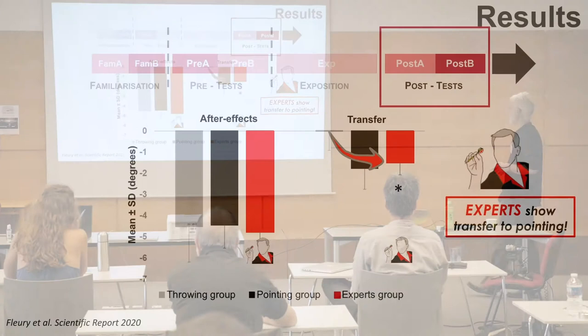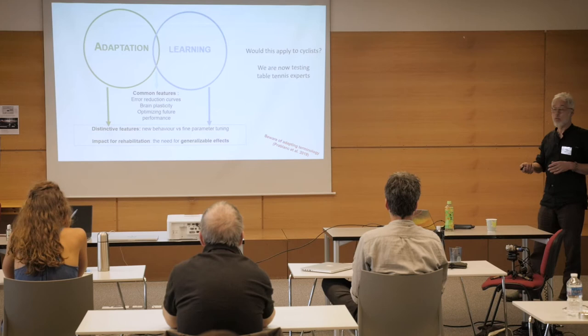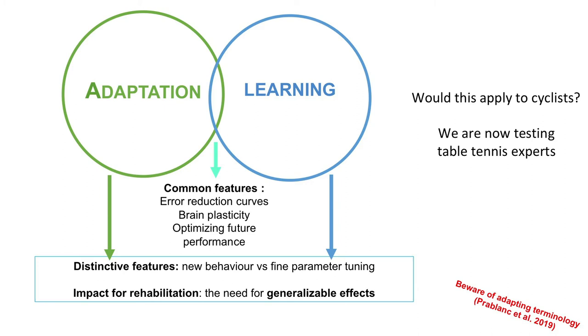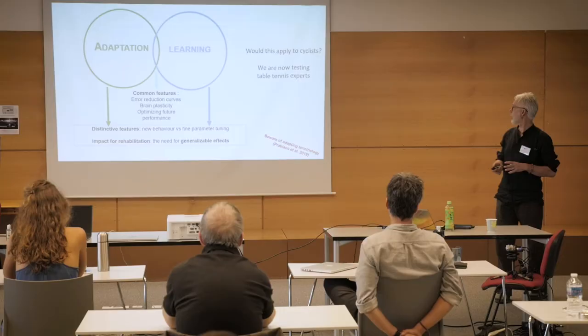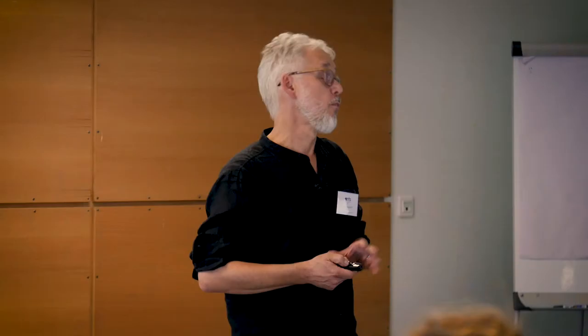Expert dart throwers show transfer to pointing, demonstrating that if you want to produce generalizable effects, it is better if the task is mastered before producing plasticity. If you adapt using a mastered task, you produce generalizable effects; if you learn using a less mastered task, learning remains local to that situation. An open question is whether the same would apply to cyclists, and we are now testing table tennis experts with different expertise levels.